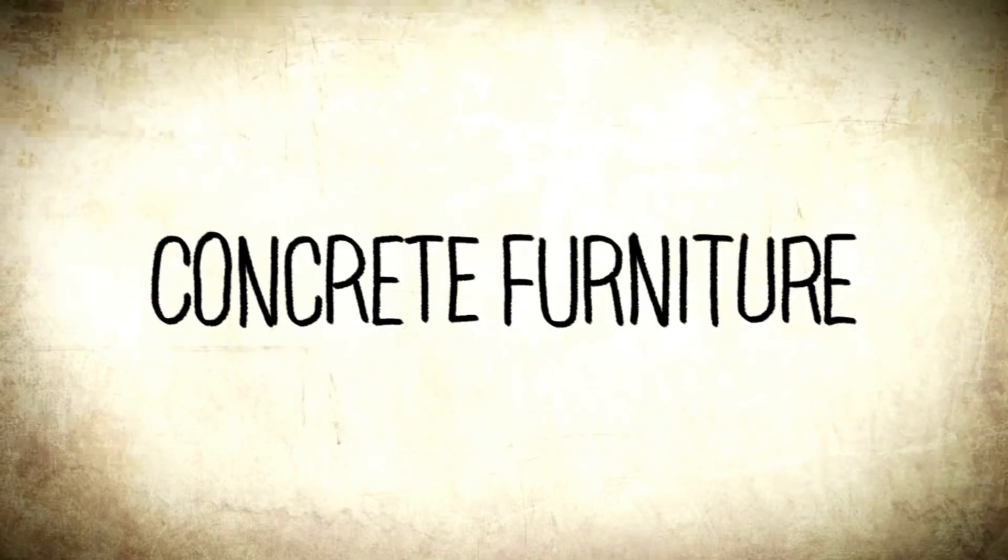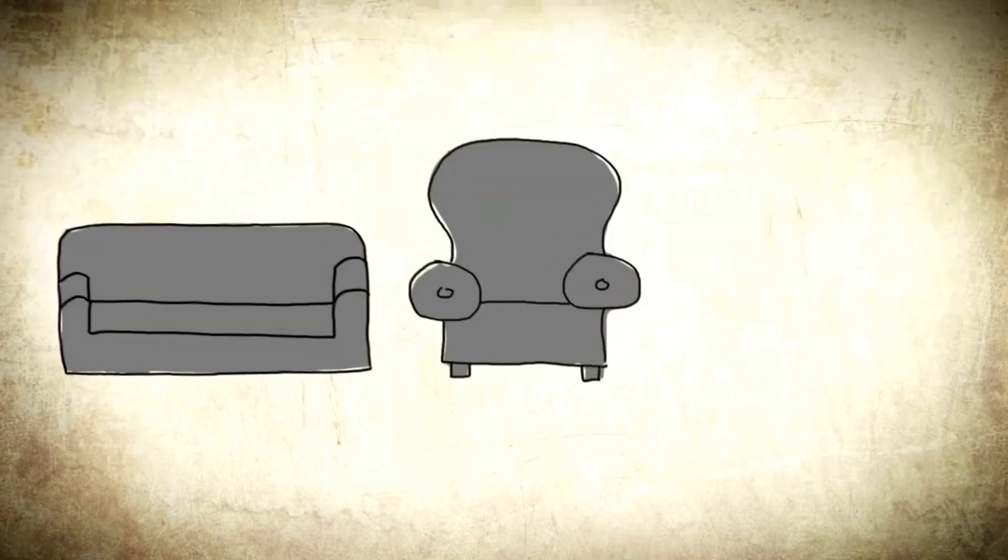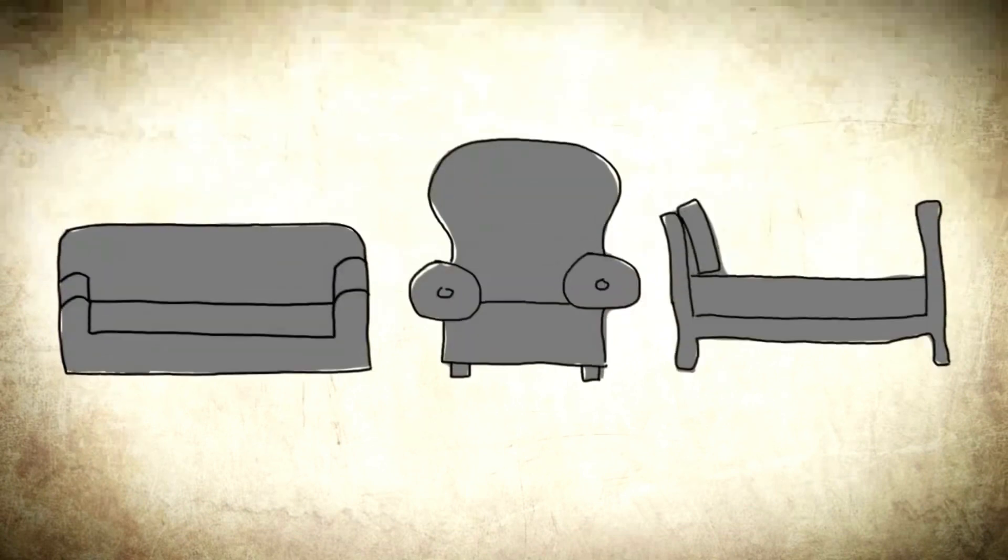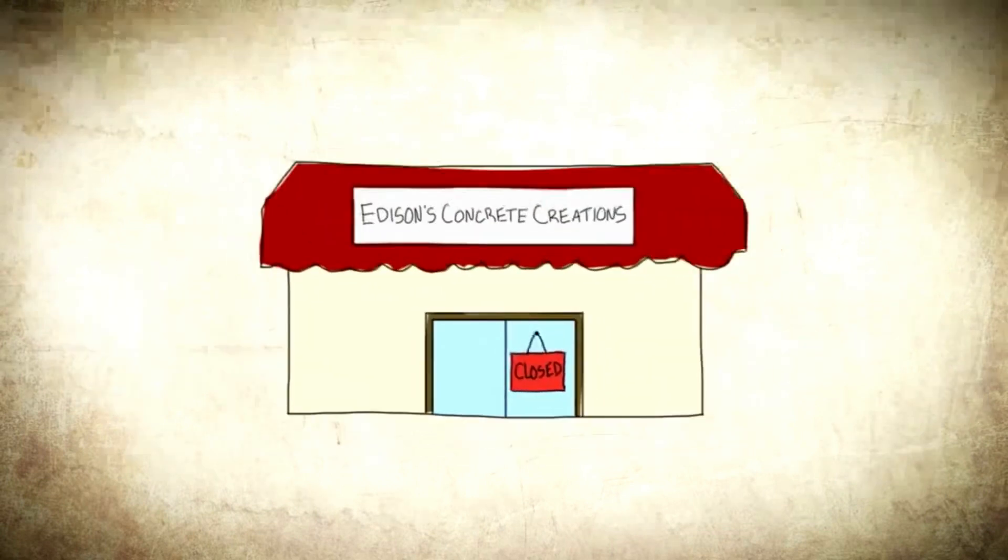One of the lesser-known ideas of Edison was concrete furniture. It came from a failed attempt at making concrete houses. Edison used what was supposedly a lightweight foam concrete to manufacture various home furnishings. Edison shipped out some of his furnishings to put them on display, but they arrived broken up. This caused Edison to close down his line of concrete creations for good.